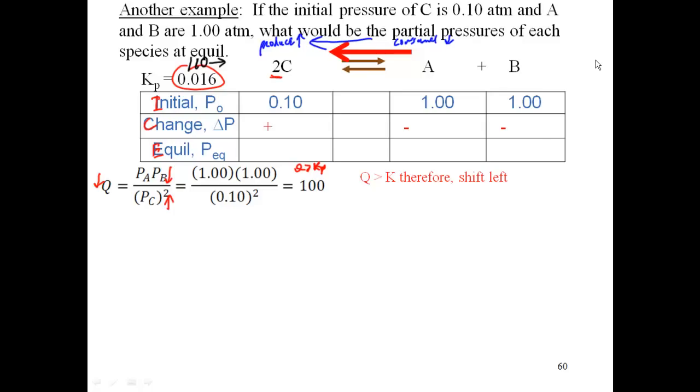Now we have to figure out our relationship. What is going to be that change? I don't know what it is, so I'm going to call it x, and I'm going to use x with the same coefficients as my balanced equation. So my change in C will be a positive 2x. My change in A will be a negative x, and my change in B will be a negative x.